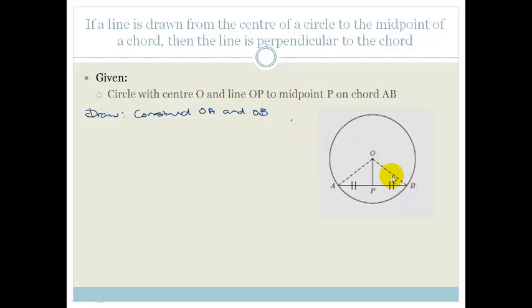Now if we look at those two triangles, what do we want to prove? We want to prove that this line is perpendicular to this line. So if there was some way that we could prove that this angle was equal to this angle, then because they're on the straight line, that would mean that this was 90 degrees and therefore these two lines are perpendicular.